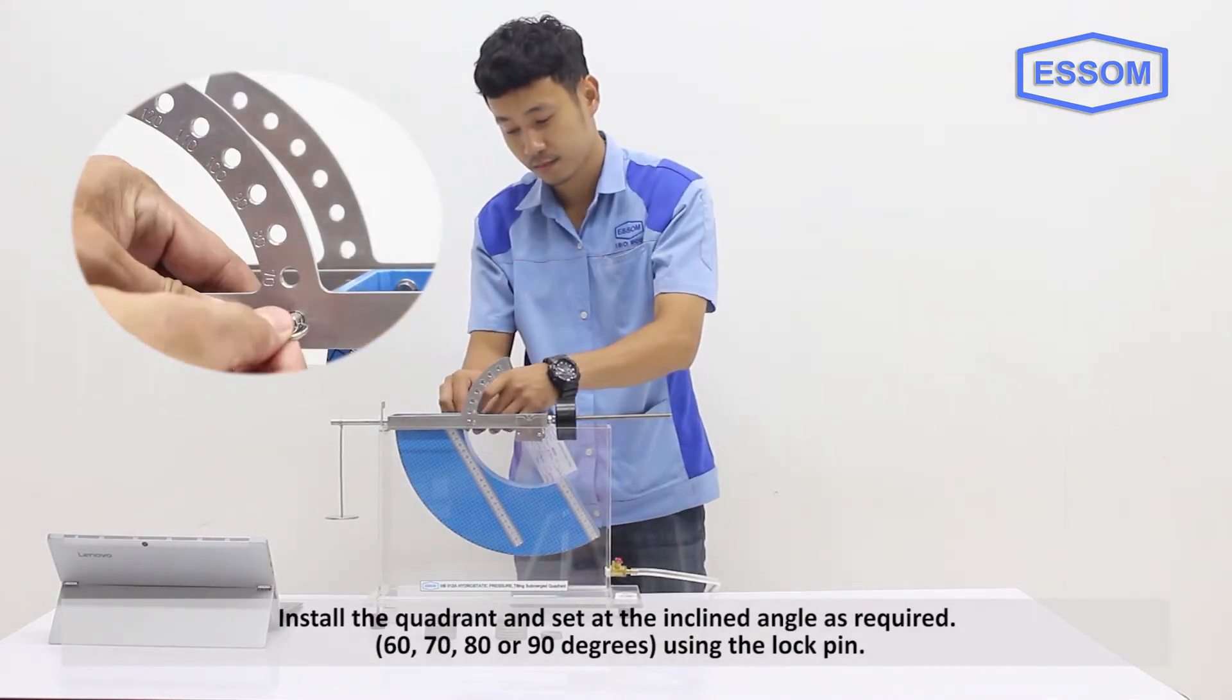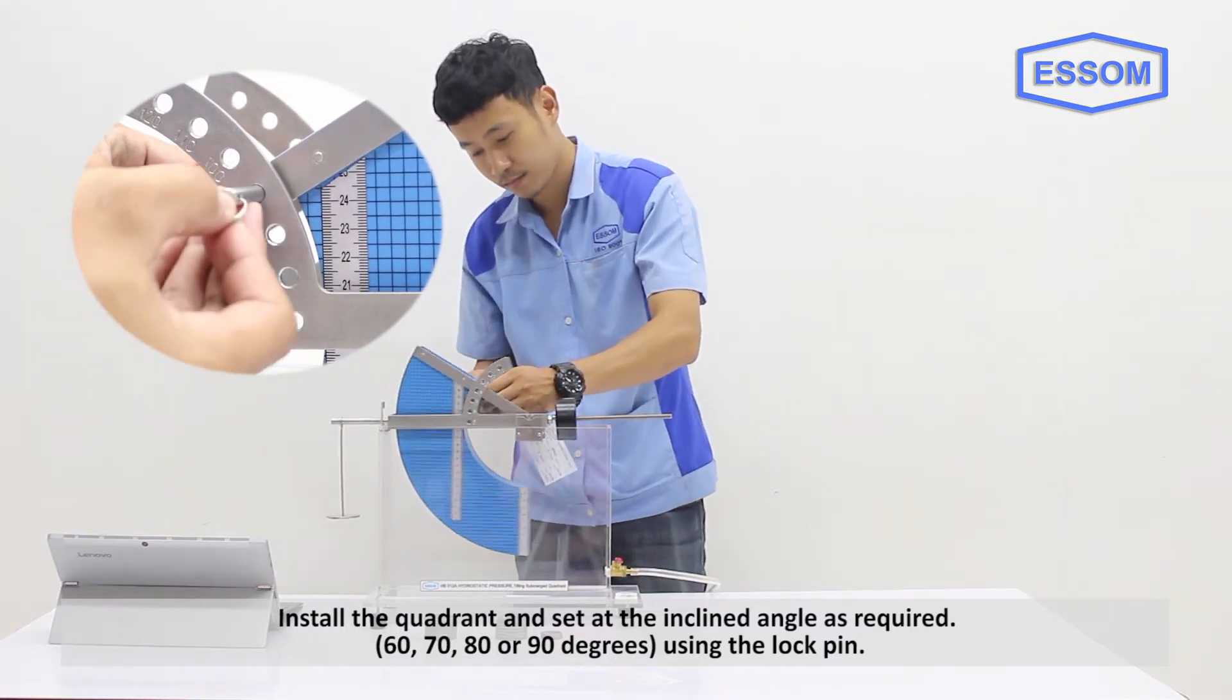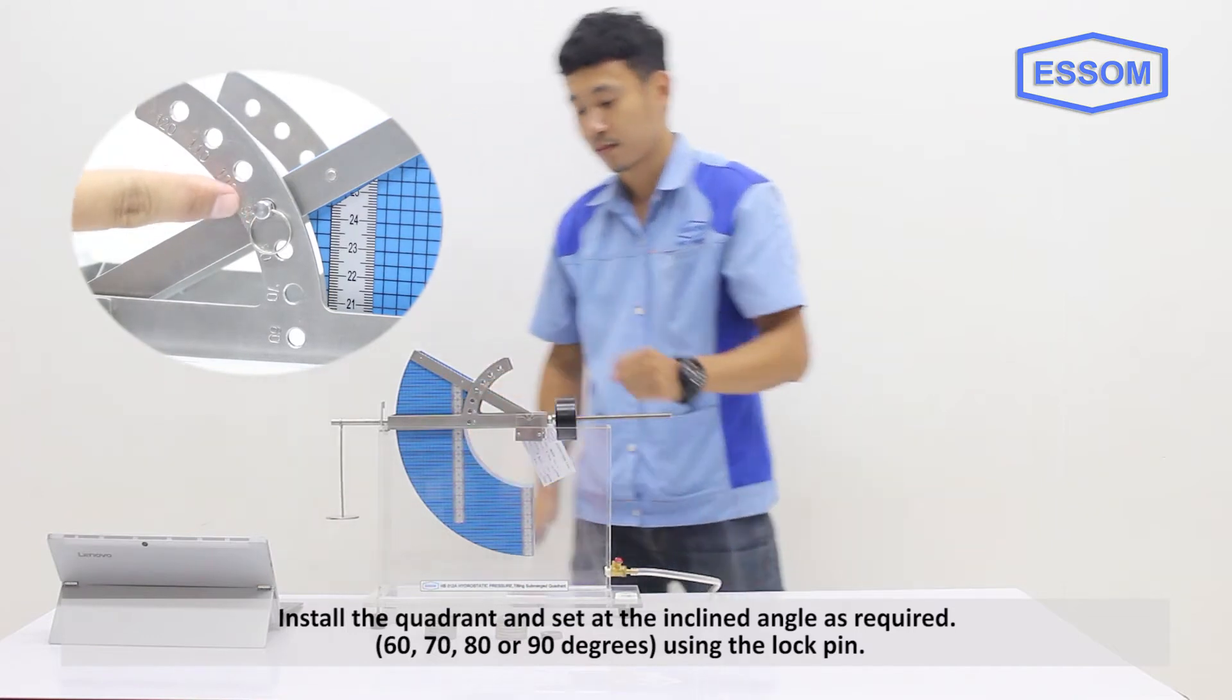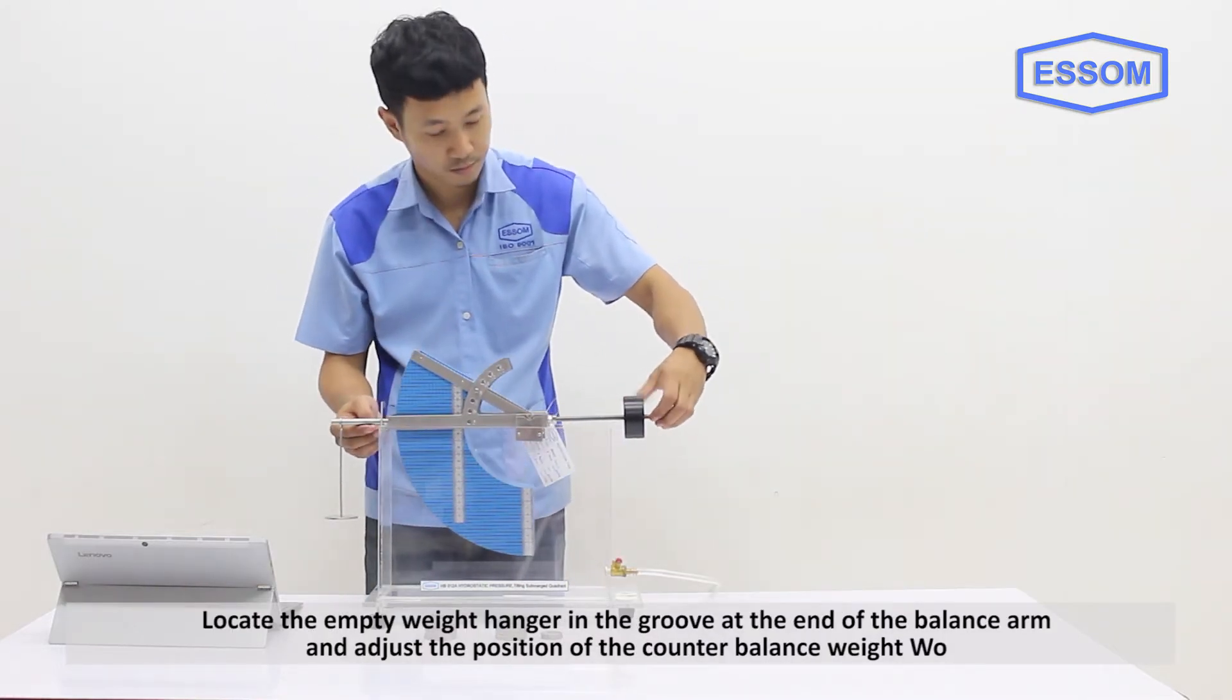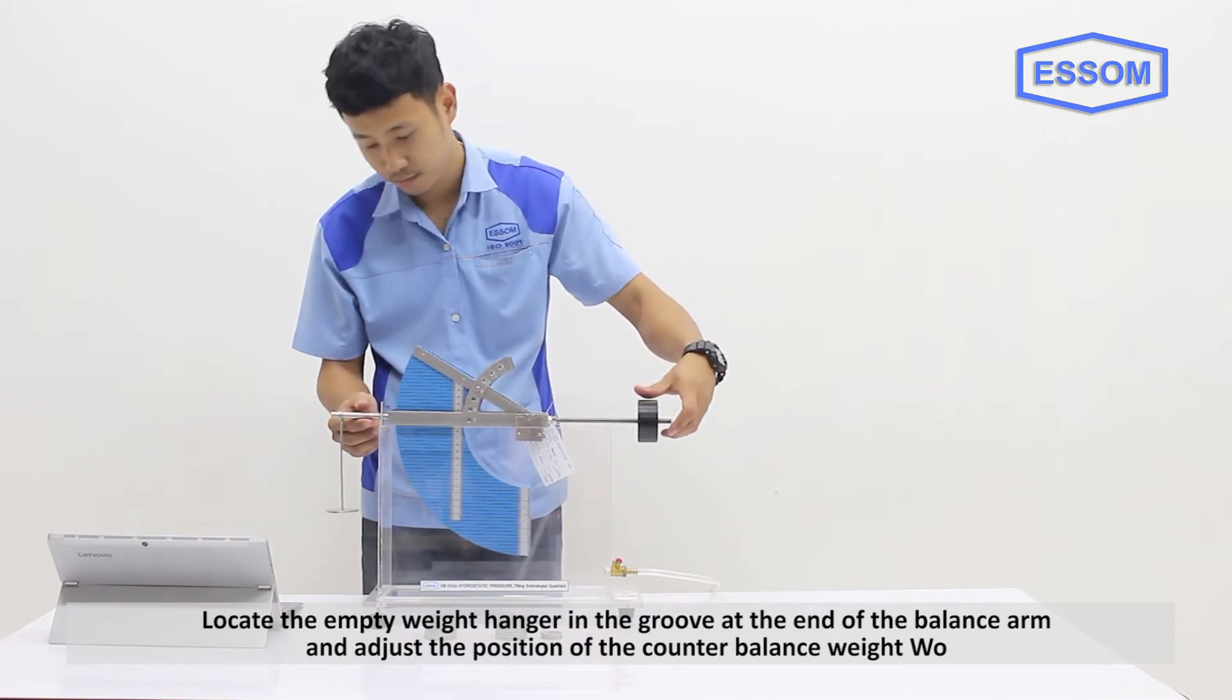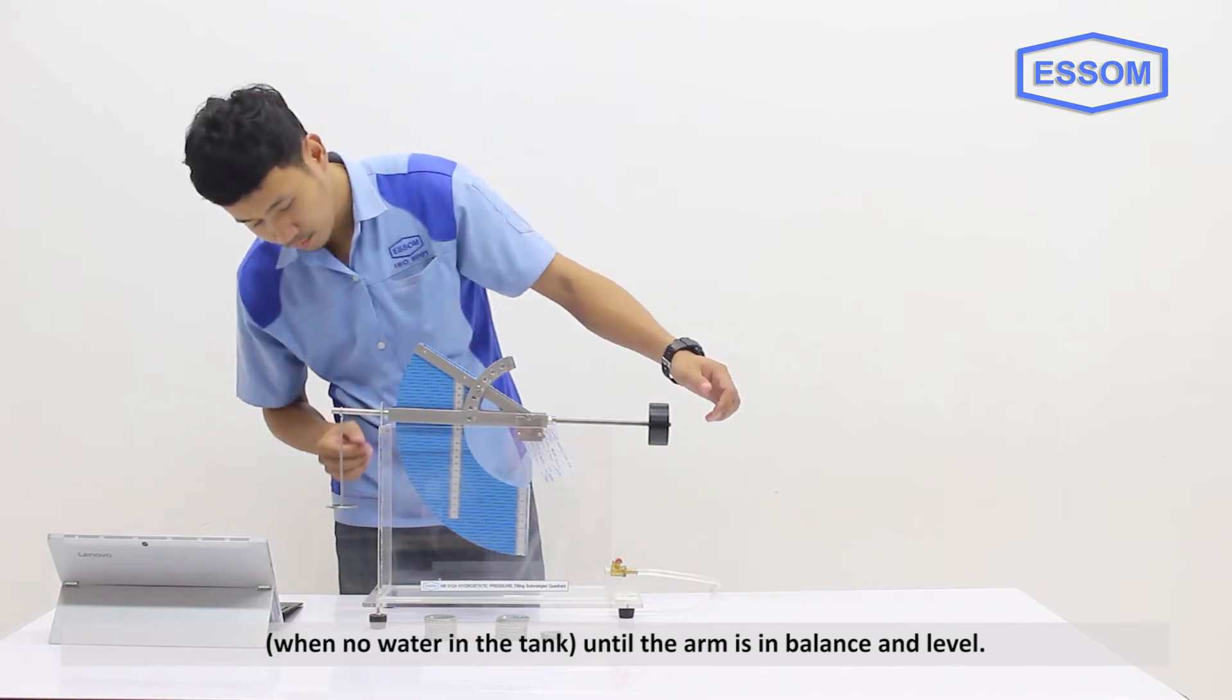Install the quadrant and set at the inclined angle as required: 60, 70, 80, or 90 degrees, using the lock pin. Locate the empty weight hanger in the groove at the end of the balance arm and adjust the position of the counterbalance weight W0 when no water in the tank until the arm is in balance and level.